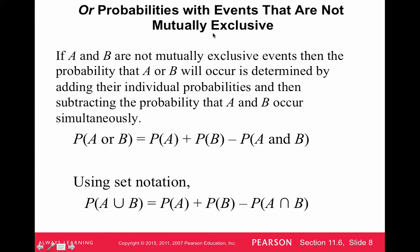Now, or probabilities with events that are not mutually exclusive. If A and B are not mutually exclusive events, then the probability that A or B will occur is determined by adding their individual probabilities and subtracting the probability that A and B occur simultaneously. We're still adding probabilities. Or always means to add. But if they aren't mutually exclusive, then we need to subtract the overlap because we'll have counted that stuff twice. Using set notation, the probability of getting A or B is the sum of the probabilities minus their overlap. Because if we count them separately, then we'll count the overlap twice.